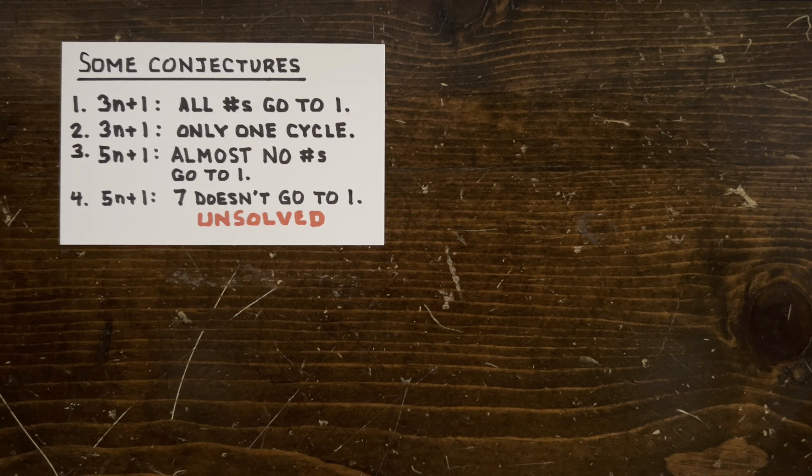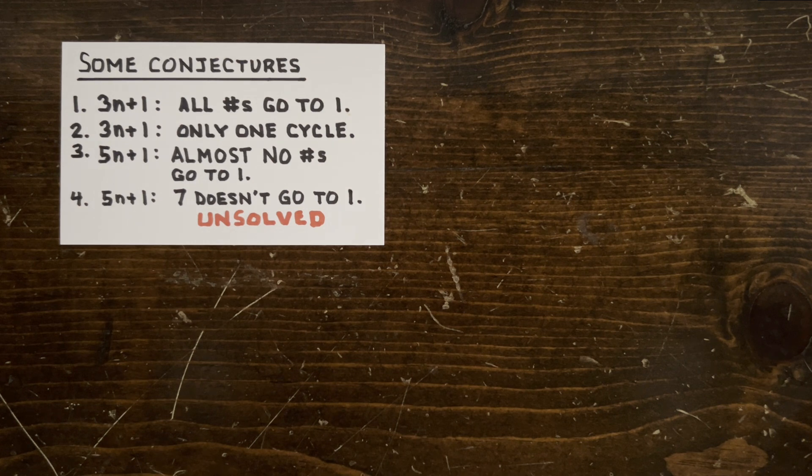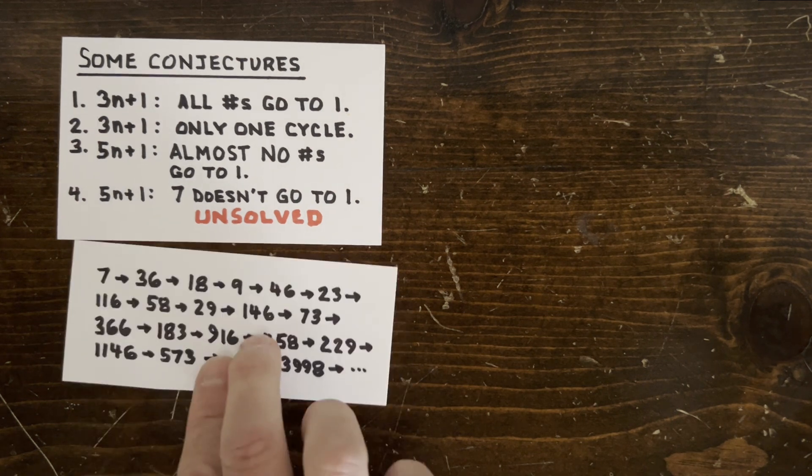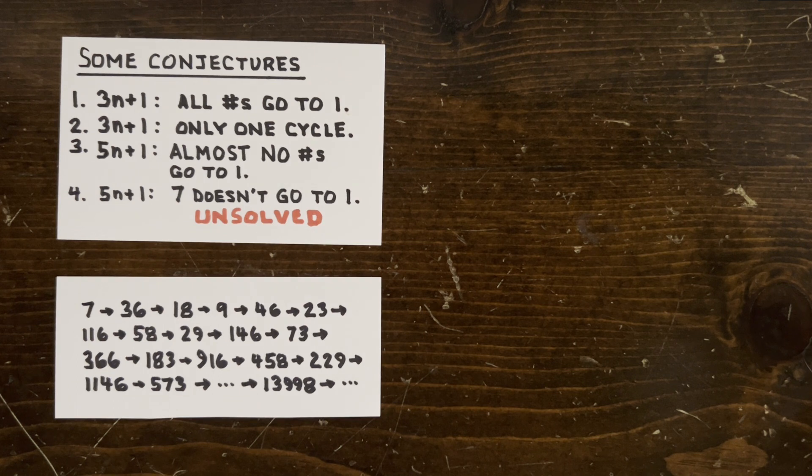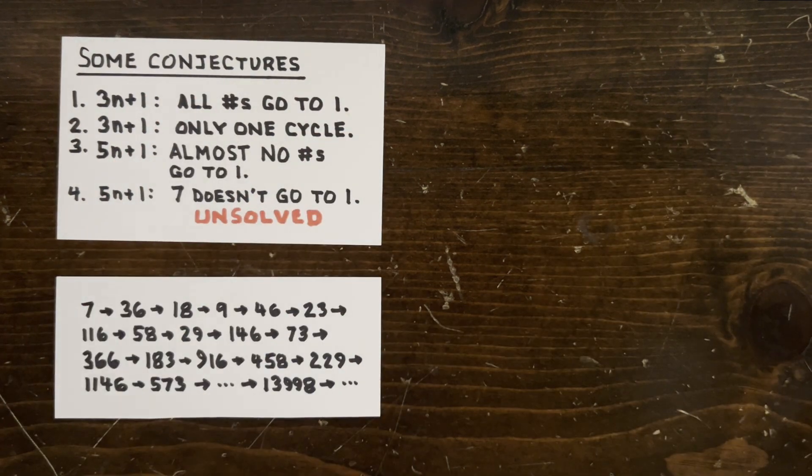And four, under 5N plus 1, 7 doesn't reach 1, which is a special case. And 7's trajectory looks like this: 7, 36, 18, 9, up to 6,999. And if you keep following it, it looks like it never stops.